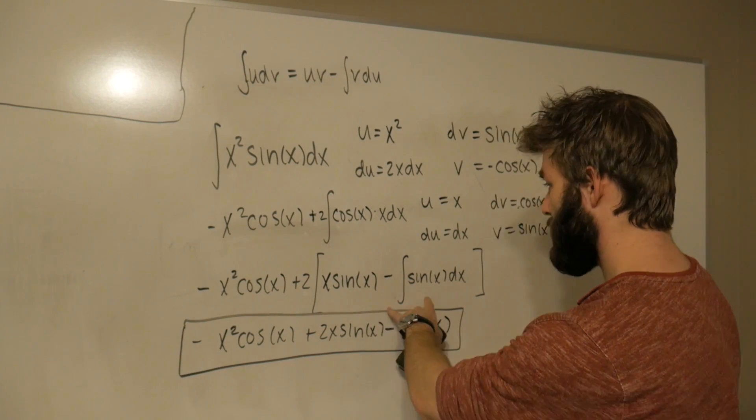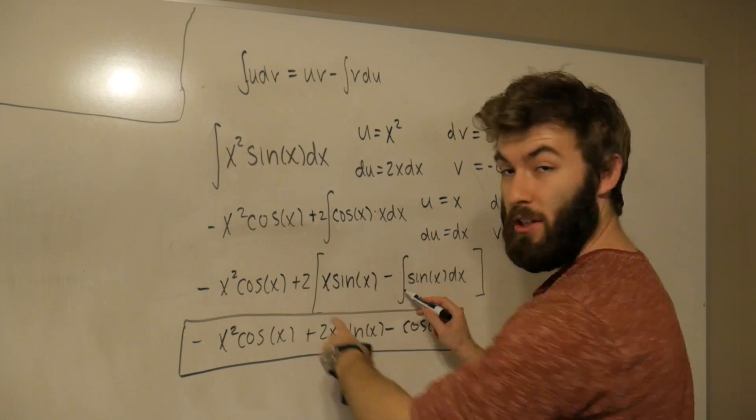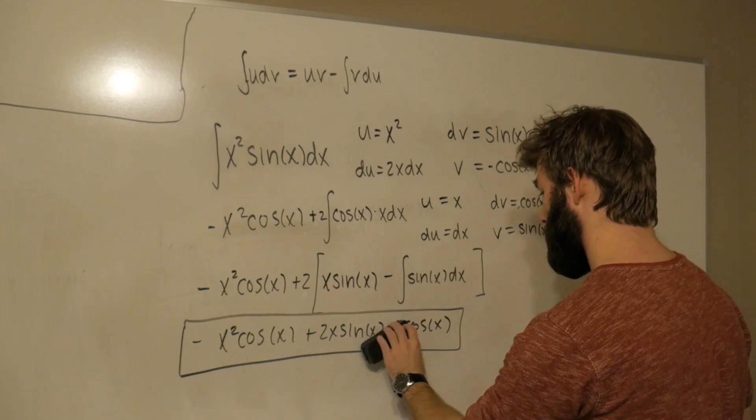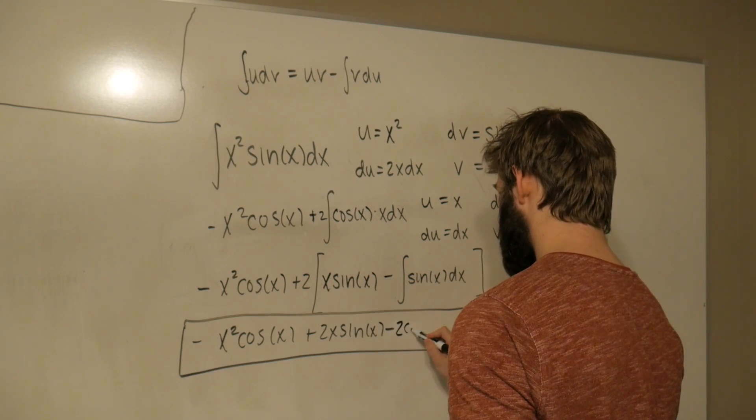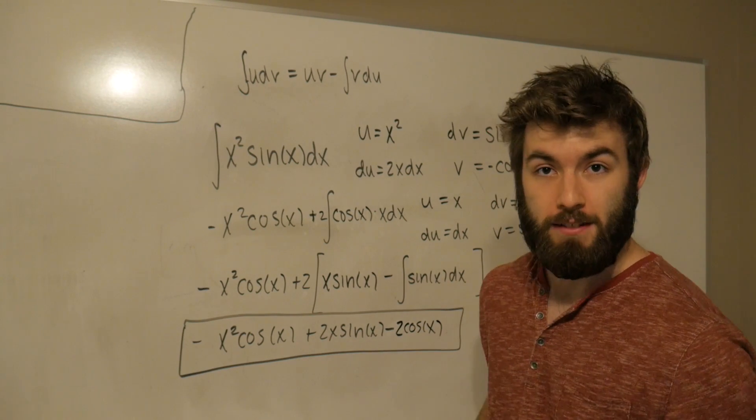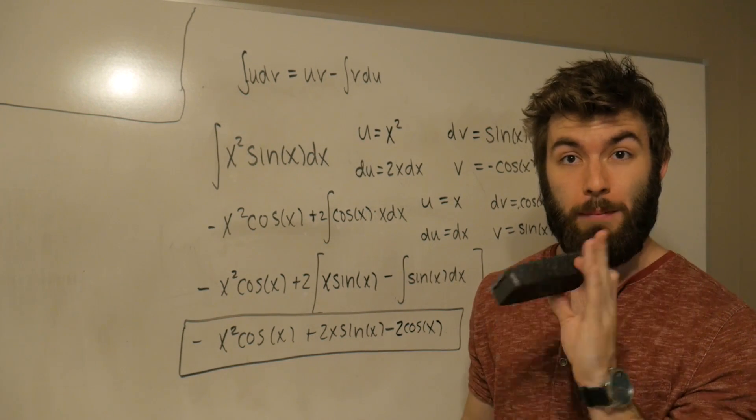...before we go any further, if you notice here, this 2 was not distributed to this integral. So this should actually be -2 cos(x). Sorry for the confusion. So this is -2 cos(x). Great. Now that that's all said and done, let's get into tabular integration.